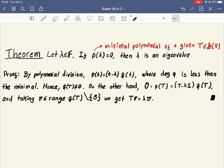And to prove that, suppose p of lambda equals zero, and let's run the polynomial division. We have the minimal polynomial, we divide it by t minus lambda, we get some q. What's the degree of q? It's the same as the degree of p minus one.